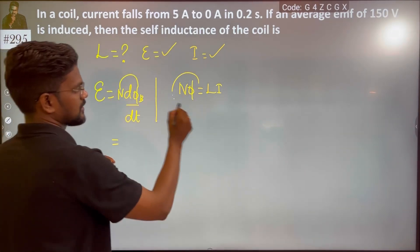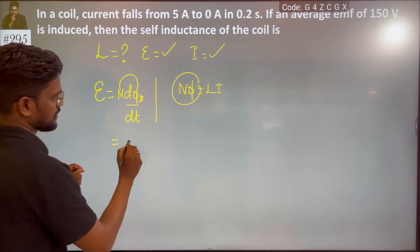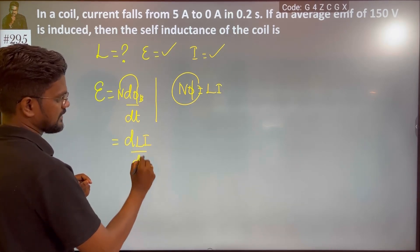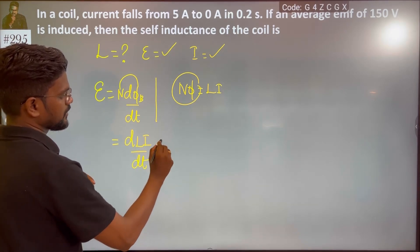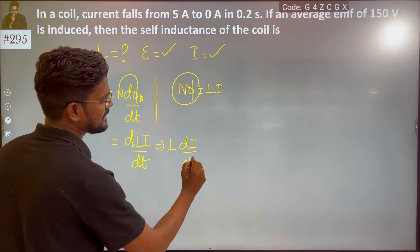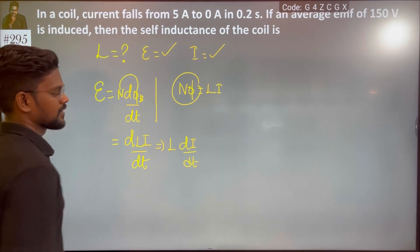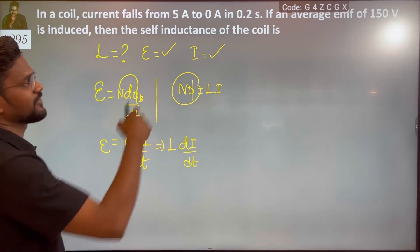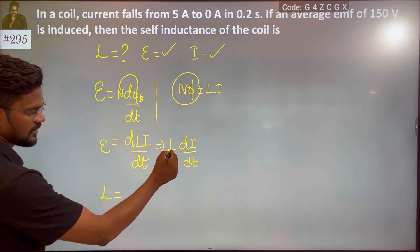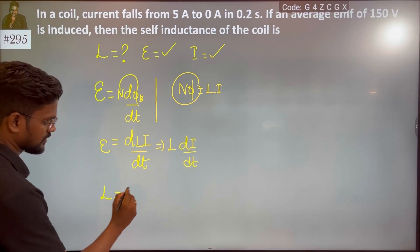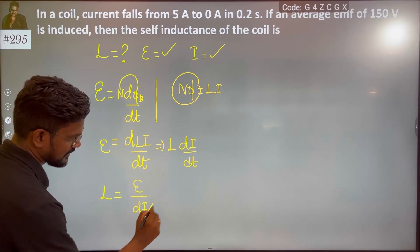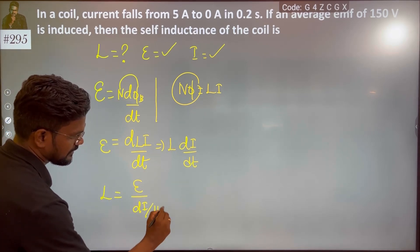We can also say that EMF equals d(LI)/dt, or since L is a constant, EMF equals L times dI/dt. So we can say L is equal to EMF divided by dI/dt.